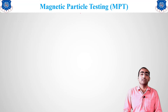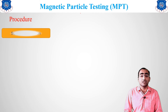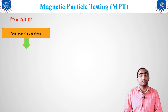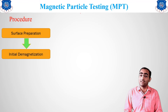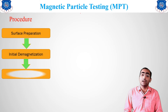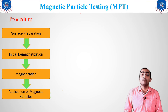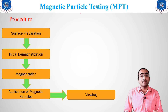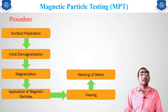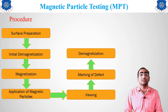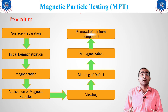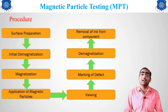Now for the procedure of this method: the first step is surface preparation, followed by initial demagnetization. After demagnetization, we proceed with magnetization of the material. After magnetization, we apply the magnetic particles. Then we observe the material, mark the defects found, demagnetize the material again, and finally remove the magnetic particles for further use.